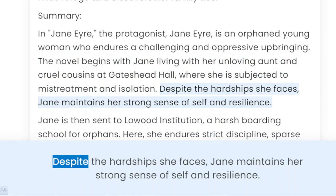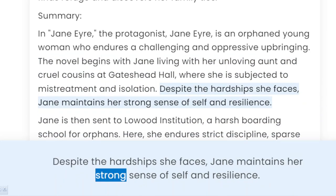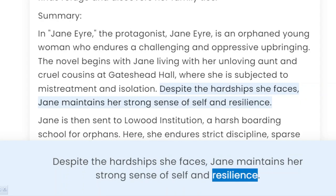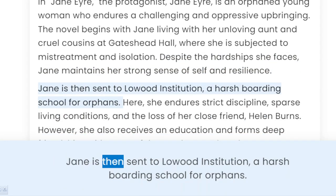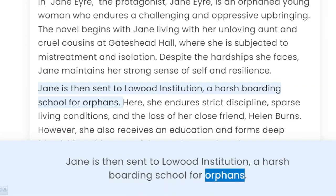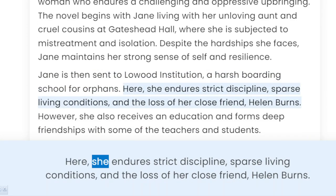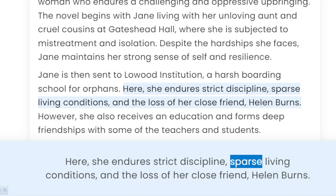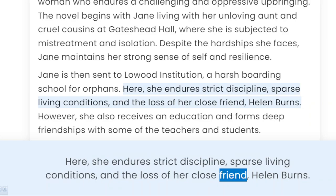Despite the hardships she faces, Jane maintains her strong sense of self and resilience. Jane is then sent to Lowood Institution, a harsh boarding school for orphans. Here, she endures strict discipline, sparse living conditions, and the loss of her close friend, Helen Burns.